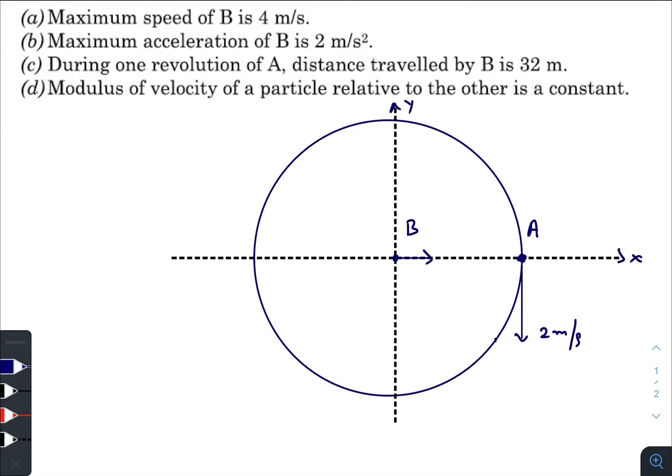After some time t, let us consider that Particle A reaches at this point. This distance is 4 m, and Particle B must reach somewhere here because they should maintain a constant distance of 4 m.